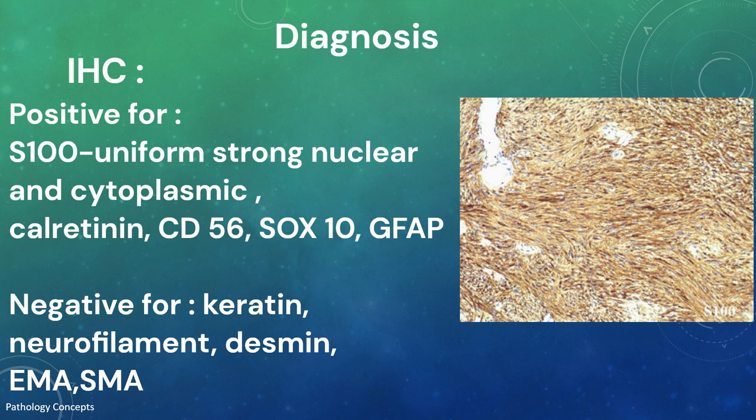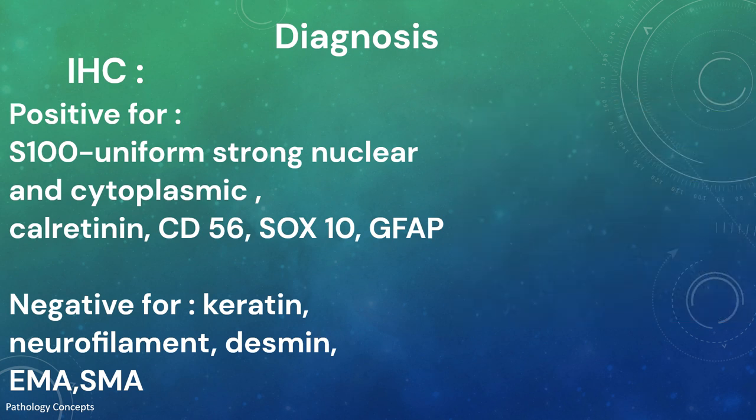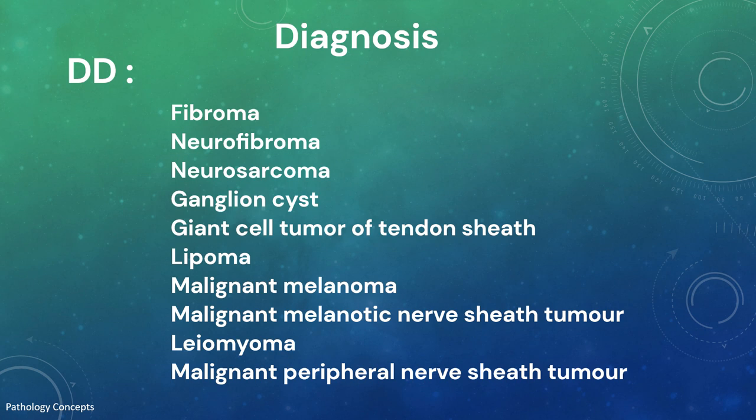For immunohistochemistry, schwannomas are positive for S100. The tumor cells show uniform strong nuclear and cytoplasmic S100 staining. Other positive stains include calretinin, CD56, SOX10, and GFAP. The tumor is negative for keratin, neurofilament, desmin, EMA, and SMA. The differential diagnosis of schwannoma includes fibroma and neurofibroma.